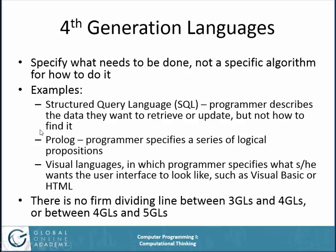In SQL, the programmer describes the data they want to retrieve or update from their database, but not how to find it. The translator of the fourth generation language figures out, given how the data is stored, which statements are needed to get there. Prolog is another fourth generation language, used in academia but never much commercially — the programmer specifies a series of logical propositions. There are also visual languages in which the programmer specifies what they want the user interface to look like, and the compiler turns it into code that builds that interface, such as Visual Basic or HTML. There's not really a firm dividing line between third and fourth generation languages — some languages have characteristics of both.